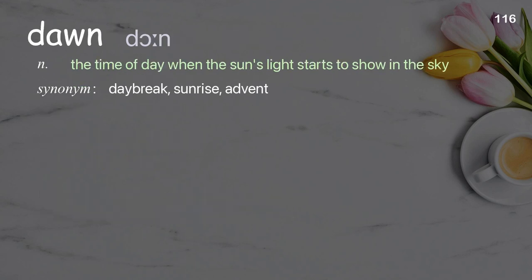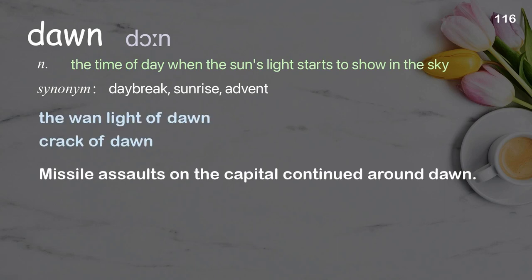Dawn. The time of day when the sun's light starts to show in the sky. Examples: the wan light of dawn, crack of dawn. Missile assaults on the capital continued around dawn.